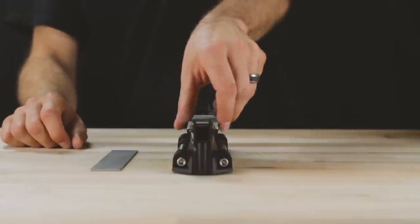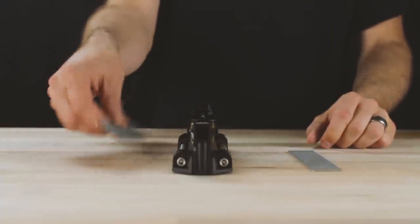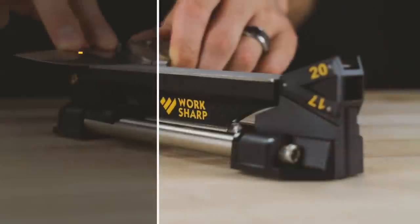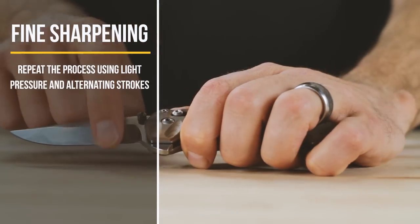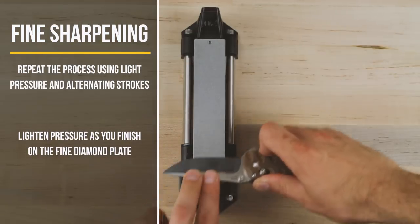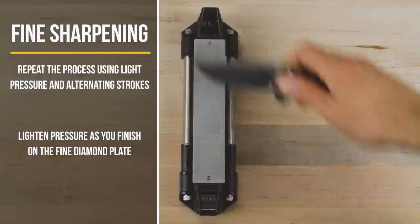Now change to the fine diamond plate. Lift coarse diamond plate to remove. Repeat process using light pressure and alternating strokes. Lighten pressure as you finish on the fine diamond plate.